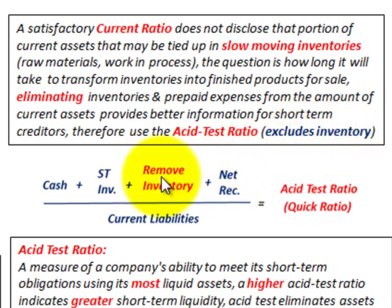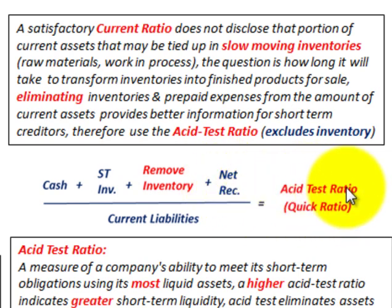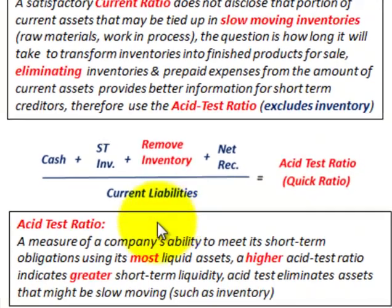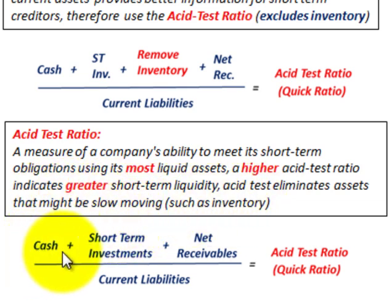For the acid test ratio — same as the current ratio but we remove inventory. We include cash plus short-term investments plus net receivables, and divide by current liabilities. Inventory is not included, but accounts receivable are. This is what we call the quick ratio. The acid test ratio measures the company's ability to meet its short-term obligations using its most liquid assets. A higher acid test ratio indicates greater short-term liquidity, eliminating slow-moving assets such as inventory.